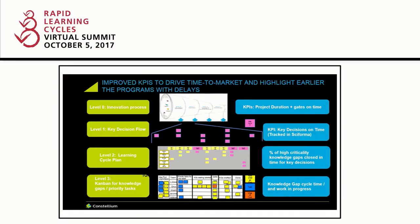The direct link between Rapid Learning Cycles and our current main project management system is that we put the key decision dates into that system and contract the macroscopic program with it. We're looking at the percentage of knowledge gaps with high criticality closed on time before their key decision as a metric for health of the project and speed of the project.